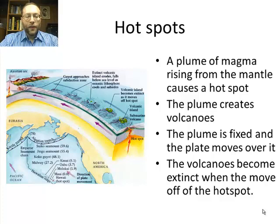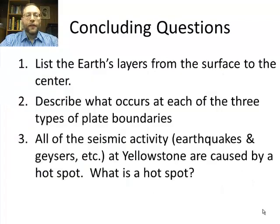So we've looked at those islands, both in the Hawaiian chain and others further on. If you get further and further away from the Big Island of Hawaii, the rocks there keep getting older and older. Now we come to our concluding questions. Number one: list the Earth's layers from the surface to the center. Number two: describe what occurs at each of the three types of plate boundaries. Number three: all seismic activity — meaning earthquakes, geysers, etc. — at Yellowstone National Park are caused by a hot spot. What is a hot spot? That concludes this vodcast, and I'll see you in class tomorrow.